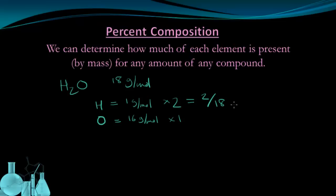So I have 2 out of 18 times 100 to convert that to a percentage. And then for oxygen, 16 times 1 is 16. So the portion of water that is oxygen weighs 16 grams out of a total of 18 grams. And again, multiply by 100 to make that into a percentage. That gives me 11% for hydrogen and 89% for oxygen.